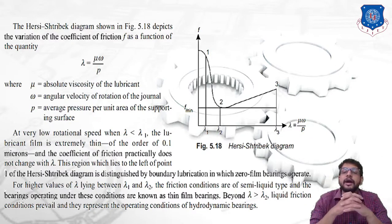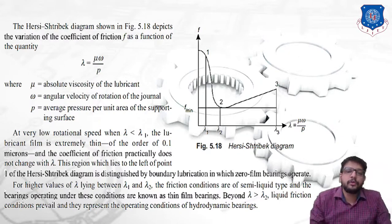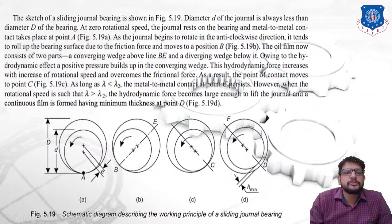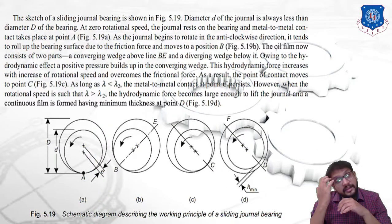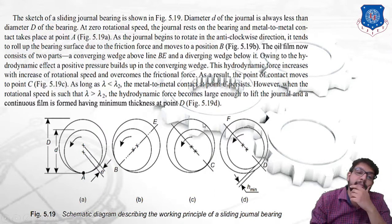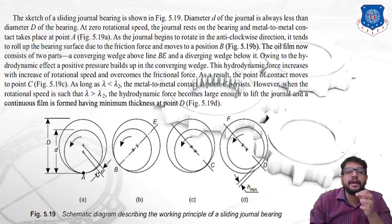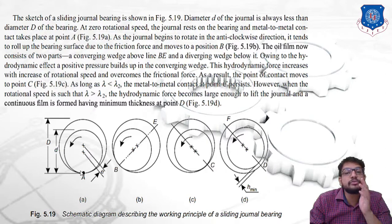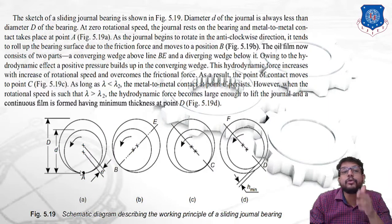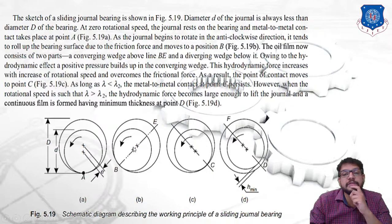The diameter d of the journal is always less than the diameter D of the bearing. At zero rotational speed, the journal rests on the bearing and metal-to-metal contact takes place at point A. As the journal begins to rotate in the anti-clockwise direction, it tends to roll up the bearing surface due to friction force and moves to position B.